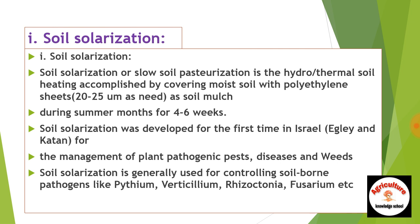Soil solarization method में हम क्या करते हैं: जब गर्मी का समय रहता है अप्रैल का, तो उस समय में हम एक transparent polythene sheet लेते हैं जो 20 से 25 micrometer की होती है। पहले irrigation करने के बाद soil के ऊपर sheet बिछा देते हैं चार से छे week के लिए। इससे हमारे pests जैसे nematodes, Pythium, Verticillium, fungi, और अन्य pupae crop बोने से पहले मर जाते हैं।